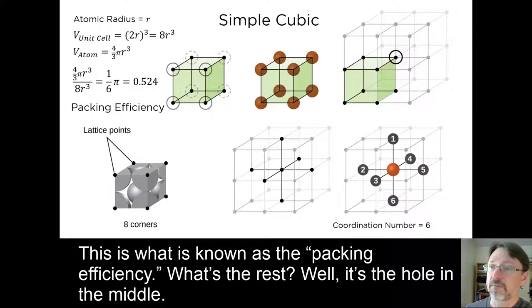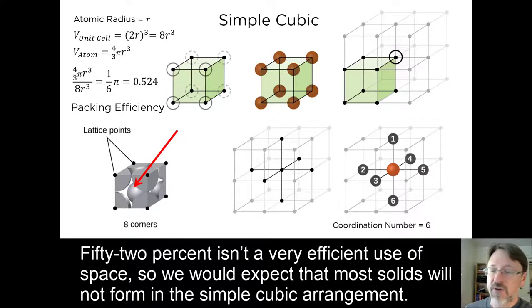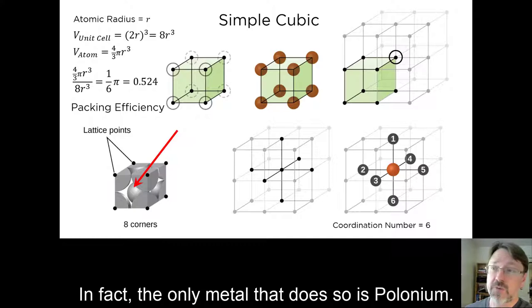What's the rest? Well, it's the hole in the middle. 52% isn't a very efficient use of space. So we would expect that most solids will not form in a simple cubic arrangement. In fact, the only metal that does so is polonium.